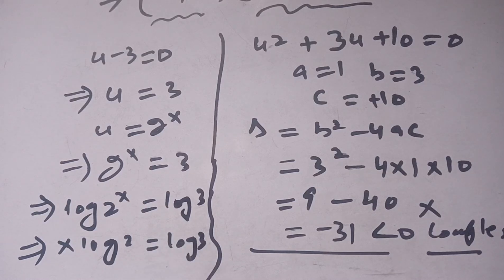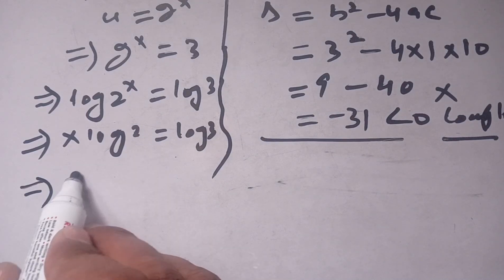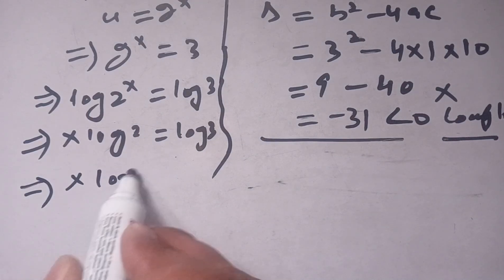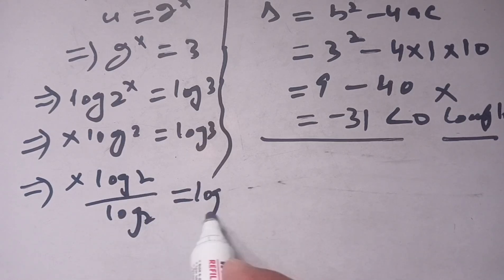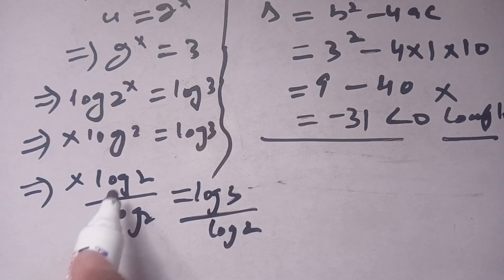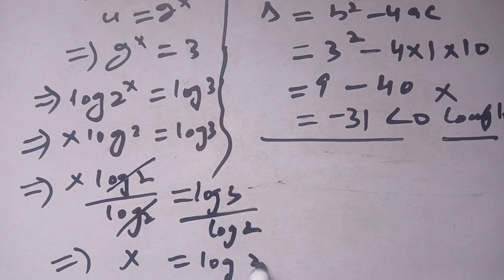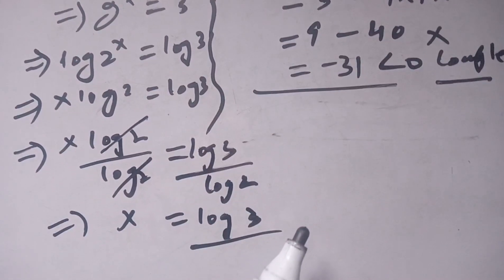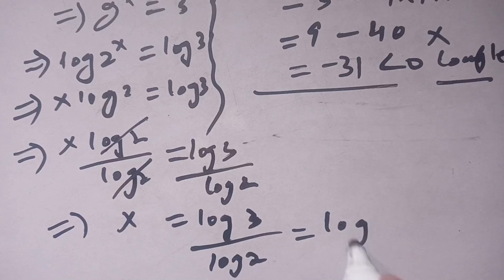Dividing both sides by log 2, we get x equals log 3 divided by log 2, which can also be written as log base 2 of 3. This is the value of x that satisfies the given exponential equation.